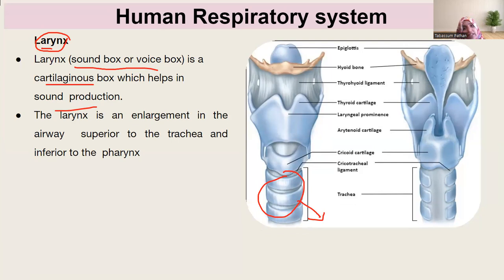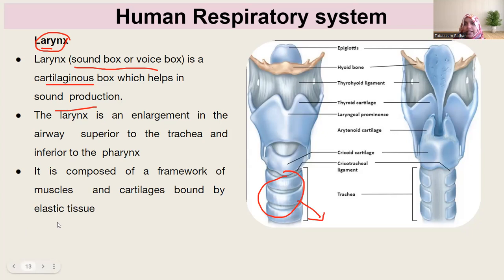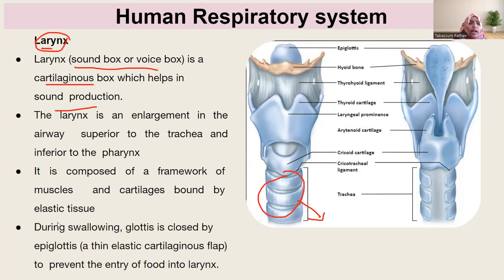The larynx is the in-between region of the pharynx and the trachea. It is made up of cartilage and muscles bound by elastic connective tissue. The production of sound when you are speaking is due to the coordination of all three parts — the muscle, the cartilage, and the elastic tissue.